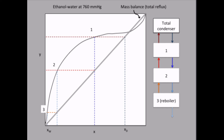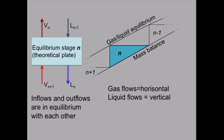Let's look into more detail at the lines and the compositions. We have a mass balance and we have the system curve, which tells us about the gas-liquid equilibrium. And we draw triangles for the equilibrium stages.